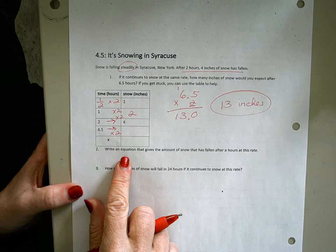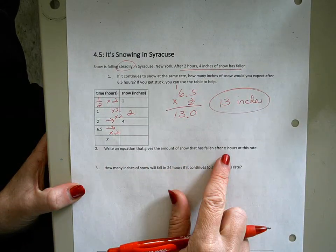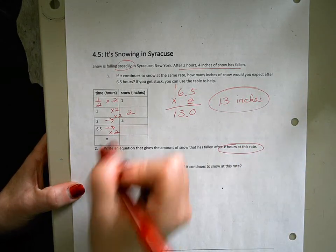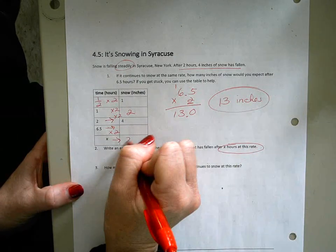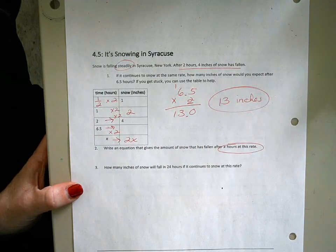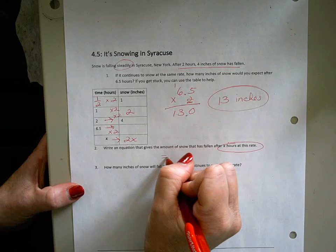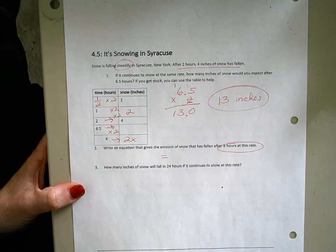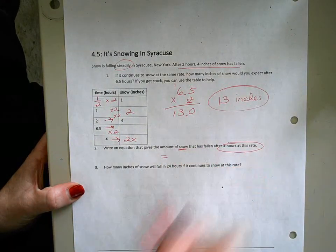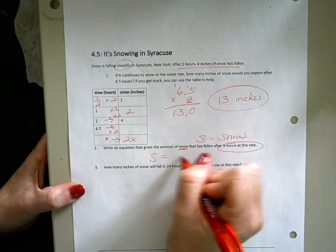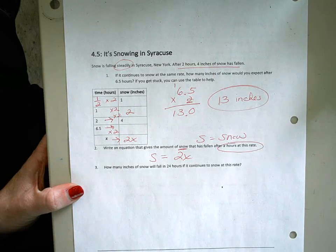Write the equation that gives the amount of snow that's fallen after x hours at this rate. So the expression is your constant of proportionality times your variable. That's not your equation - your equation has to have an equal sign. So what are we trying to find? We're trying to find our snowfall, so maybe that's my other variable. So I might put s equals snow, and s equals two times x.